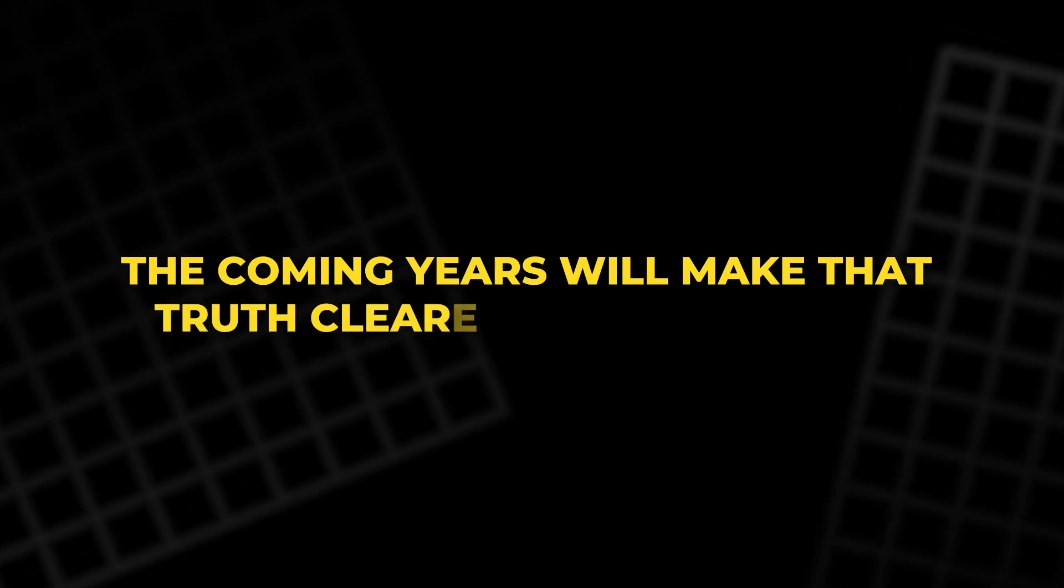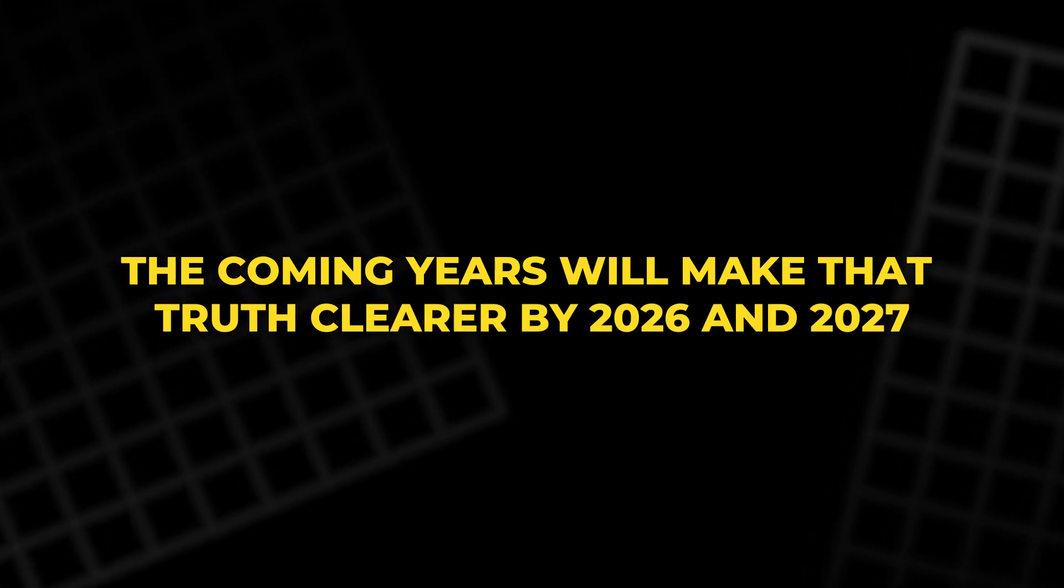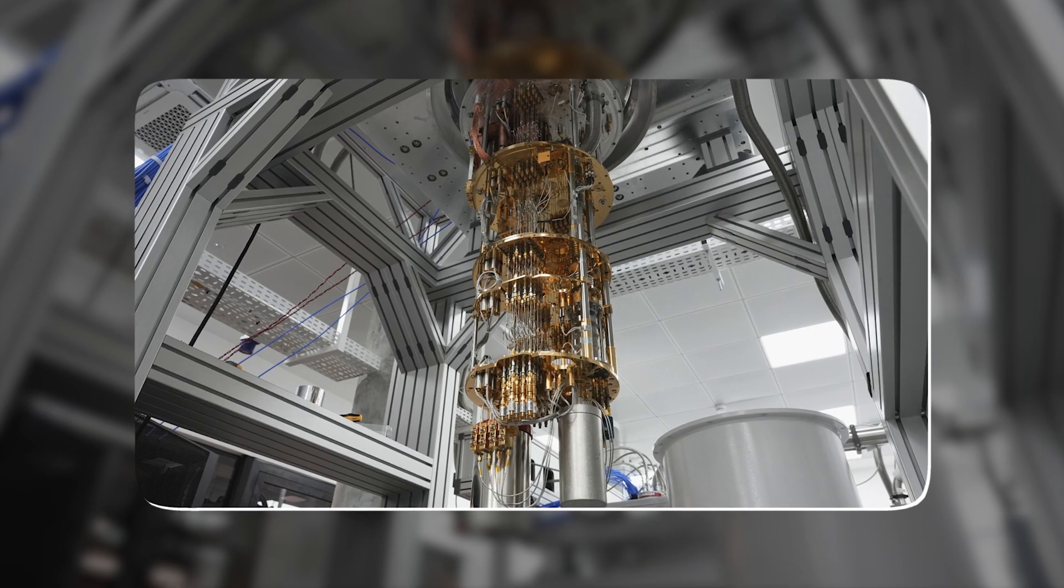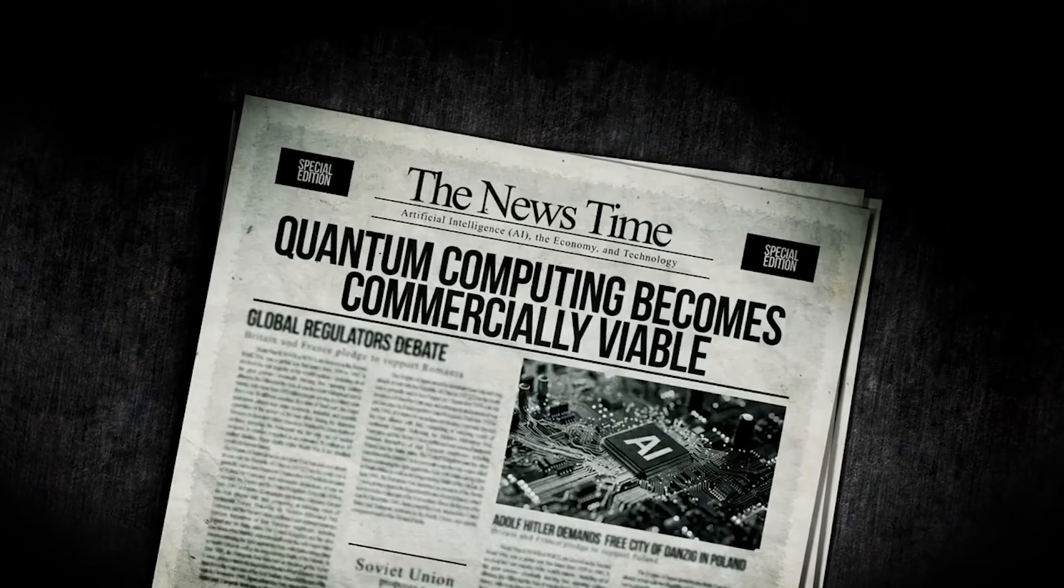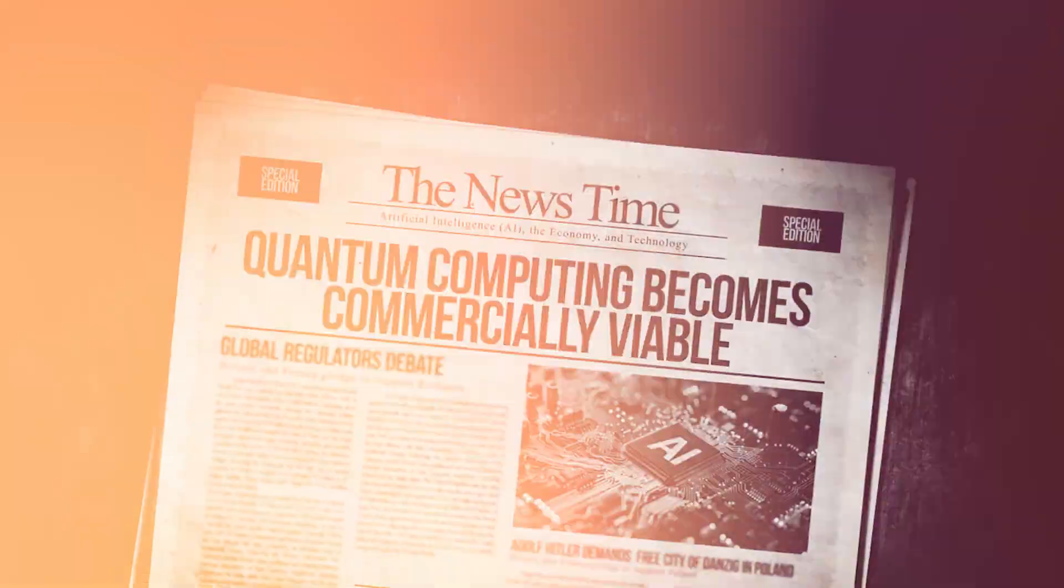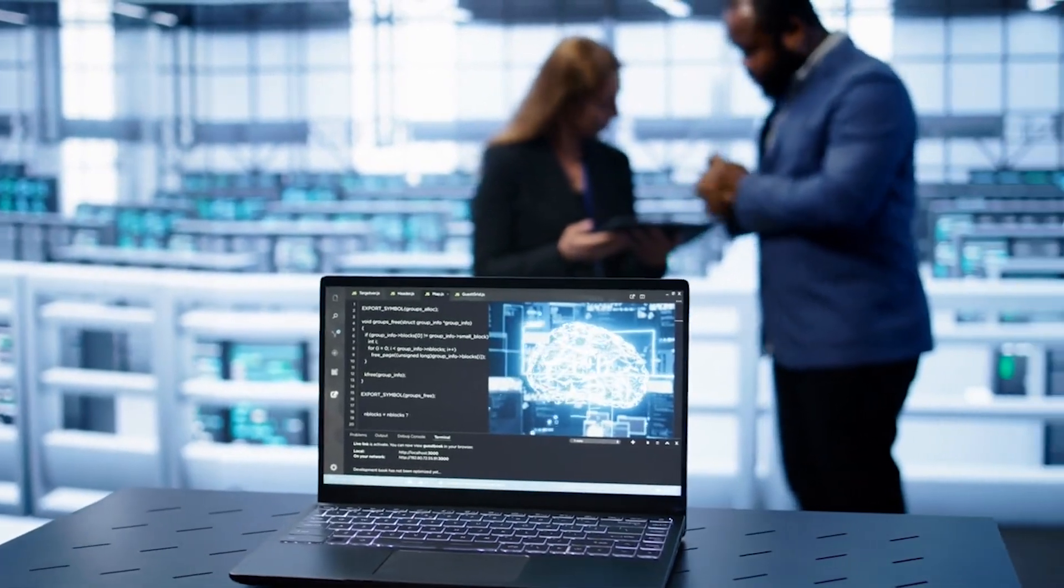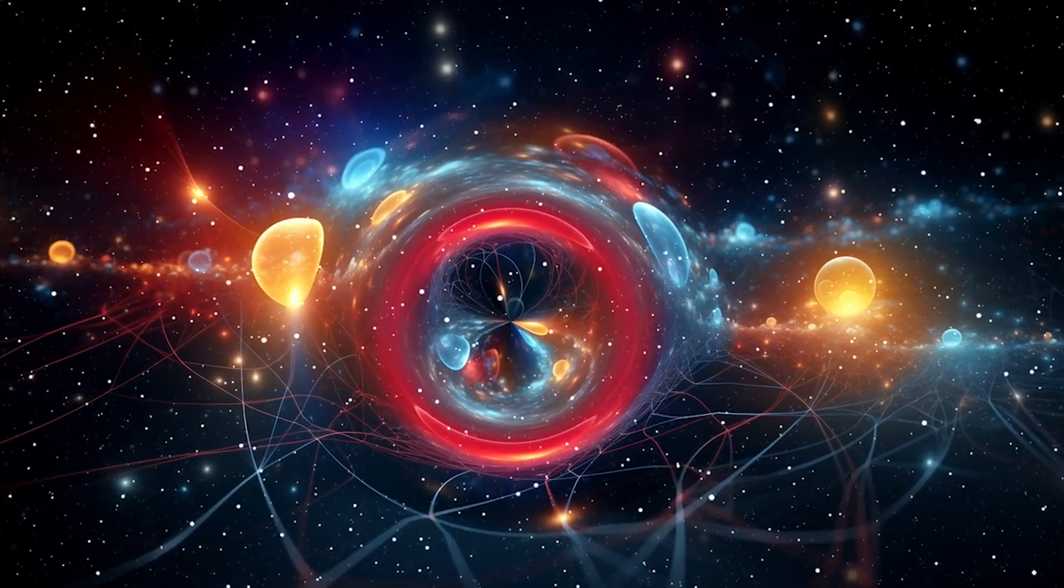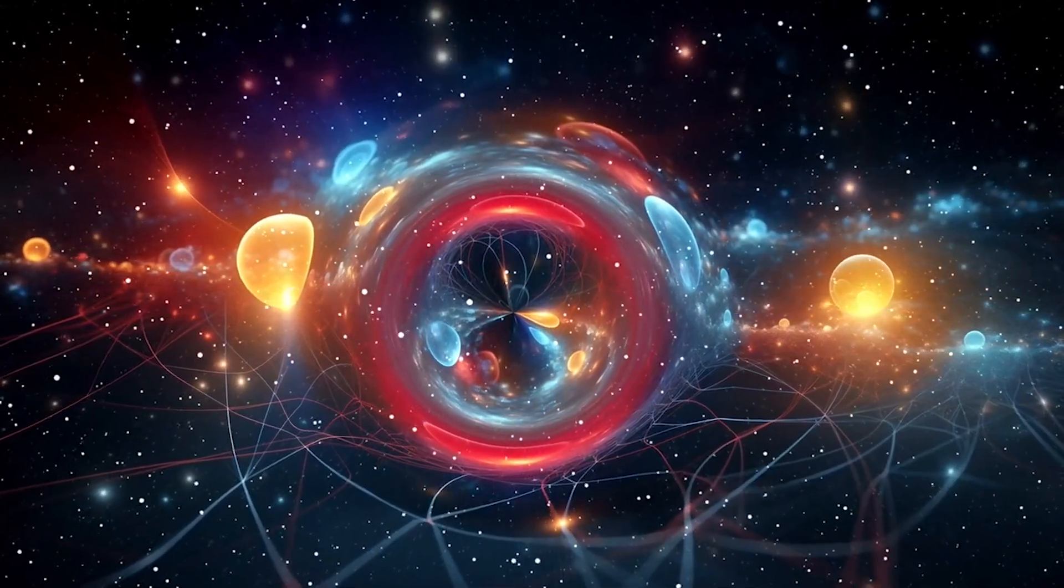The coming years will make that truth clearer. By 2026 and 2027, quantum machines may reach stability levels once thought impossible. They may perform millions of operations accurately. They may enable systems that learn from themselves and improve without human programming. They may reveal patterns of reality that change how people understand space, time, and matter.